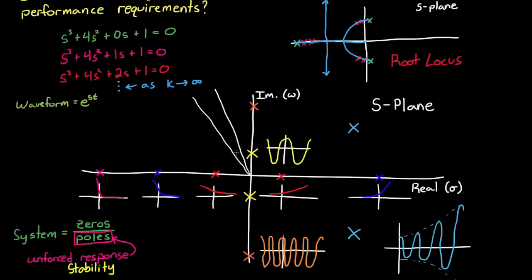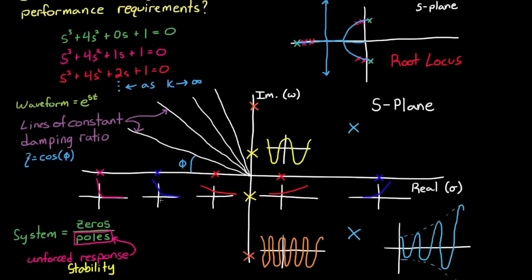But there's even more information hidden in this graph. A third set of lines that can be drawn on this chart as well. These are lines of constant damping ratio, and they radiate out from the origin at a value of cosine of phi. So two separate poles on these lines would have the exact same damping ratio.